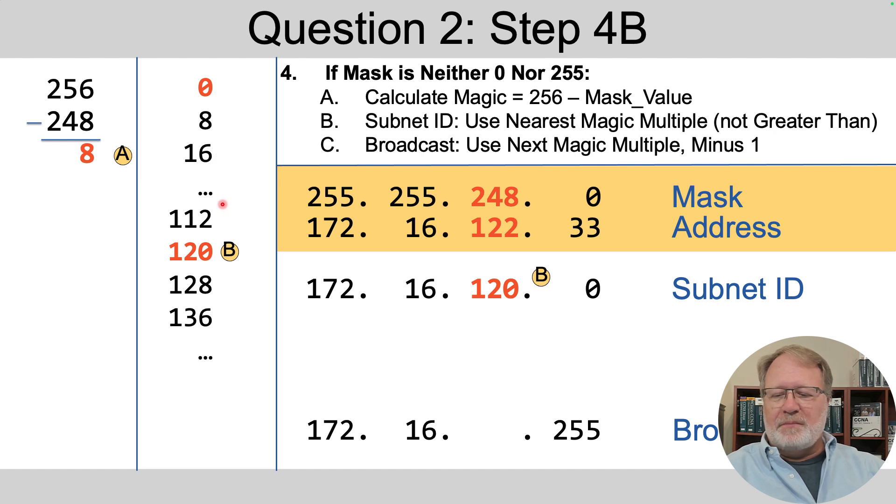So if I look at a list of multiples of 8 starting at 0, 0, 8, 16, blah, blah, blah, blah, 112, 120, 128. So comparing that list, 120 is closest to 122 without going over. So we pick 120 and there's your subnet ID. So just do repetition, keep working on them, you'll get there.